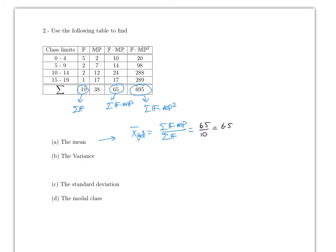The sum of frequency times midpoint is 65 and the sum of frequencies is 10, so dividing gives 6.5. These formulas are provided on the formula sheet. Now the variance formula is: sum of frequency times midpoint squared, minus the sum of frequency times midpoint quantity squared divided by sum of frequencies, all divided by sum of frequencies minus one.